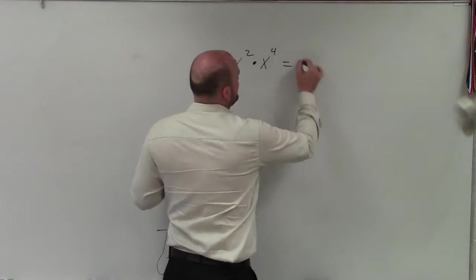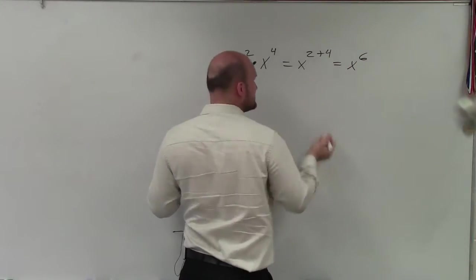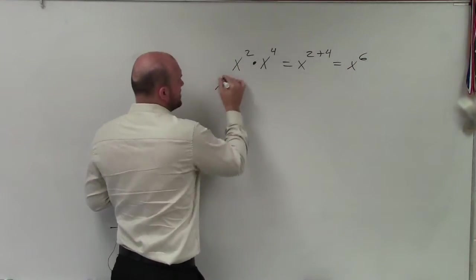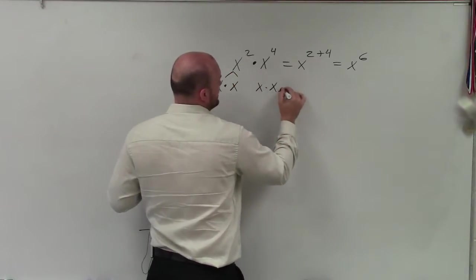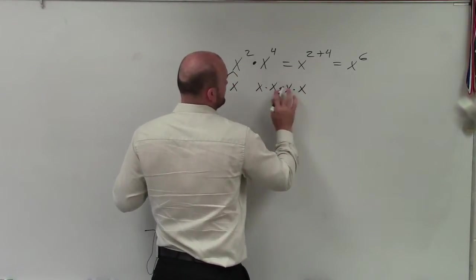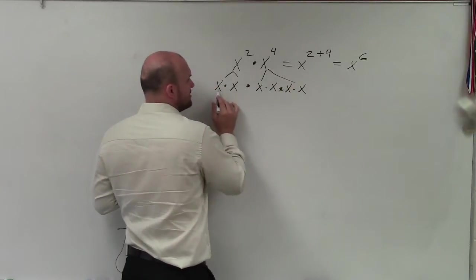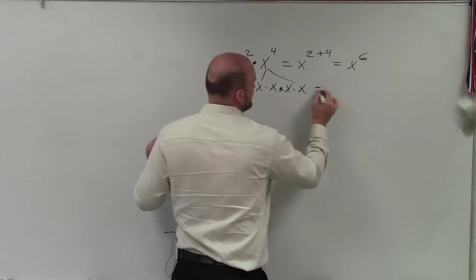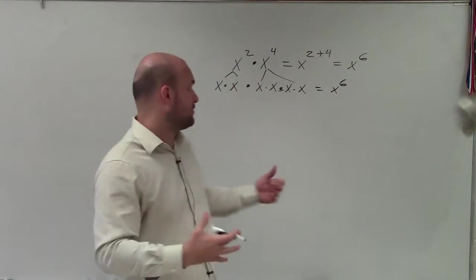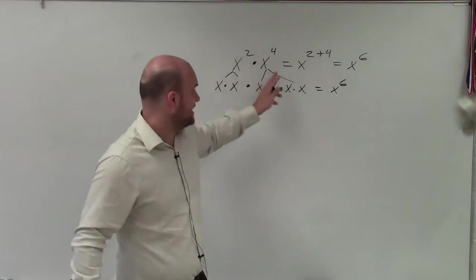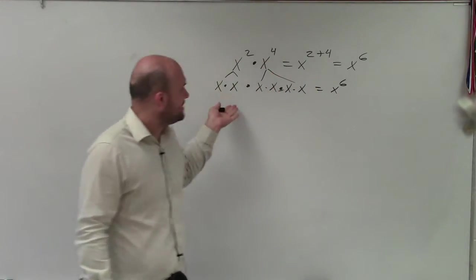So in this case, all we're simply doing is x to the 2 plus 4, which is equal to x to the 6th. If we just broke this up into x times x, which is x squared, and x times x times x times x, which was x to the 4th, and then we multiply — you can see x to the 1, 2, 3, 4, 5, 6 equals x to the 6th. Just another way broken down to see why it works, why we're not multiplying 2 times 4 to give us x to the 8th. You just add the exponents.